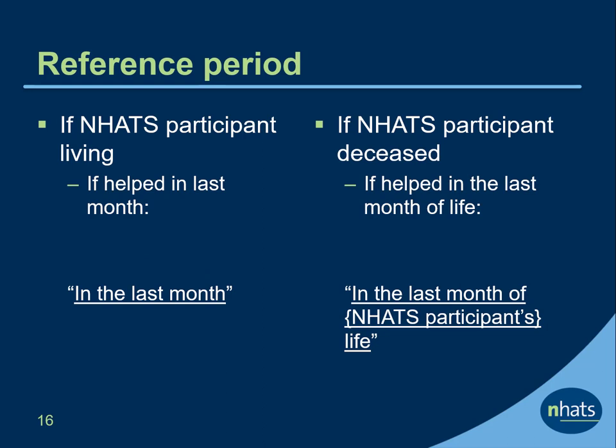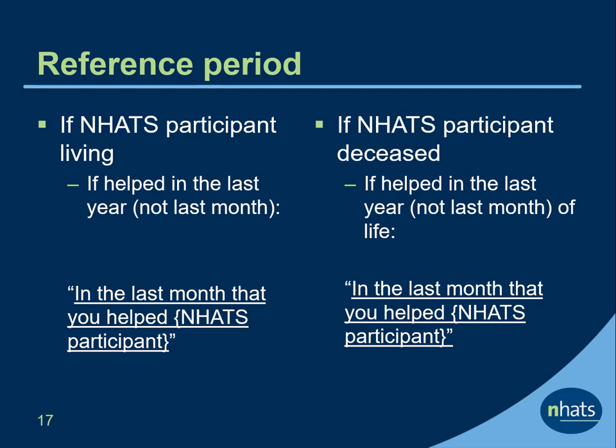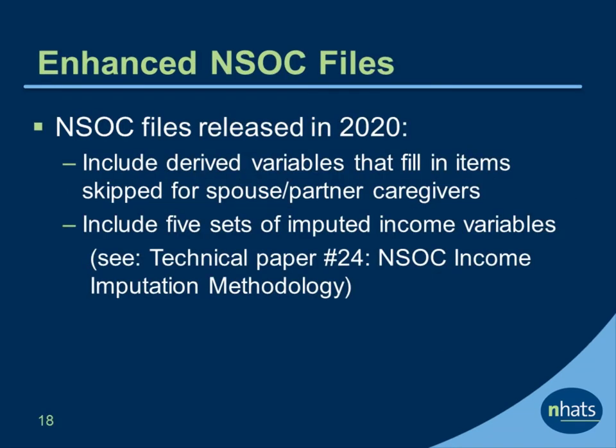The NSOC instrument uses a different reference period depending on the type of respondent. If the NHATS participant is living, questions use the timeframe 'in the last month.' If the NHATS participant is deceased, questions ask 'in the last month of the NHATS participant's life.' Caregivers who did not help in the last month or in the last month of the sample person's life, but helped in the last year or the last year of the sample person's life, are asked 'in the last month that you helped the NHATS participant.' Spouse and partner caregivers of NHATS participants skipped items that can be obtained from NHATS, including household and demographic items and income questions.